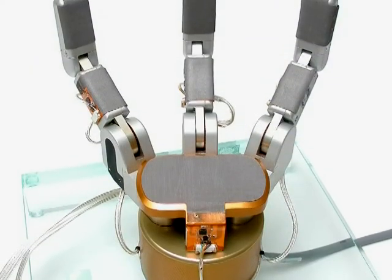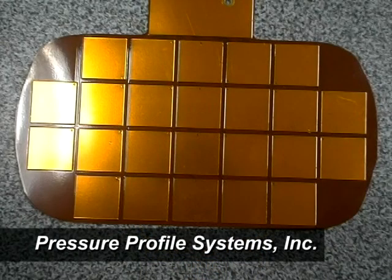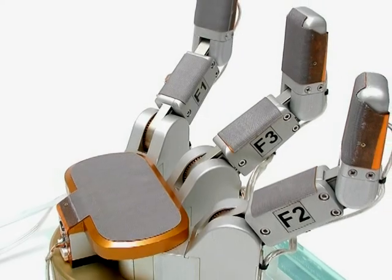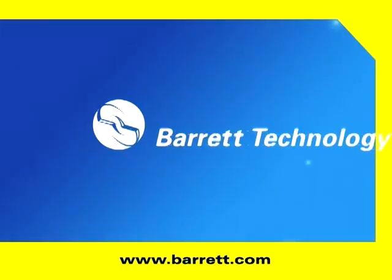And to perceive complex grasps, Pressure Profile Systems has developed tactile sensor arrays that sense touch in 162 locations across the Barrett hand's palm and grasping surfaces.